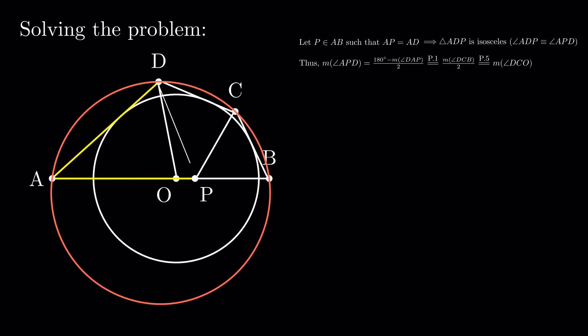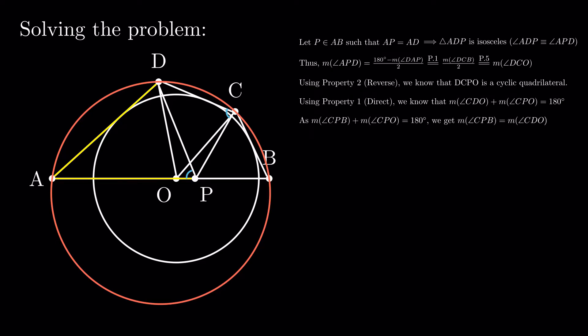Using the reverse of the second property alongside DPO equals DCO, we get that DCPO is a cyclic quadrilateral. By property 1, CDO plus CPO equals 180 degrees. As CPB plus CPO also equals 180 degrees, we get that angle CPB equals angle CDO. By property 5, CDO is half of angle ADC, so the measure of angle CPB is also half of the measure of angle ADC.